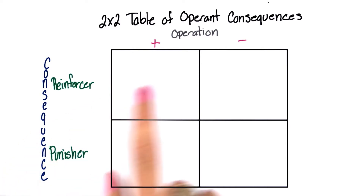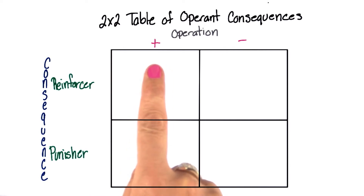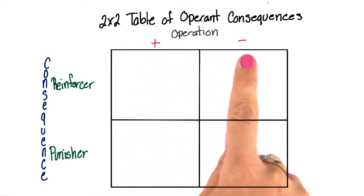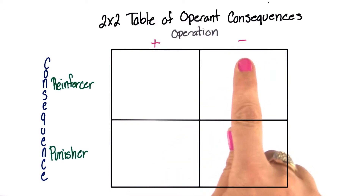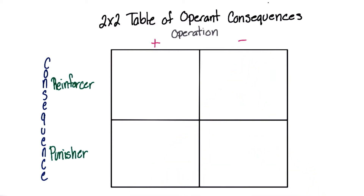Let's take a look at this two-by-two table of operant consequences. Notice we have a plus and a minus. You should think of this as adding something to the environment or taking something away — do not think of the plus and minus as good or bad, but rather just a mathematical operation.